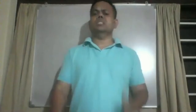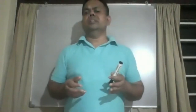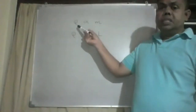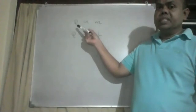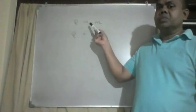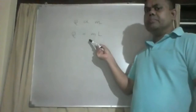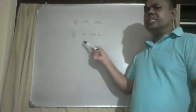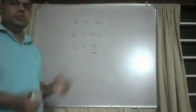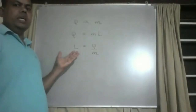The latent heat of fusion of a substance is proportional to its mass. Therefore we can write: Q is proportional to mass m. Introducing a proportionality constant L, we get Q equals mL, and therefore L equals Q over m.